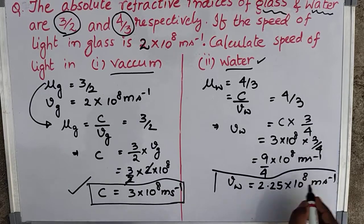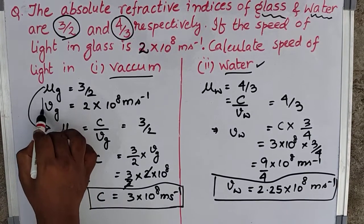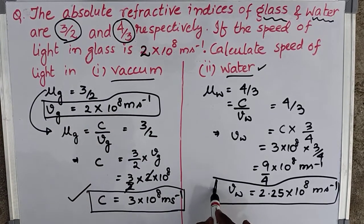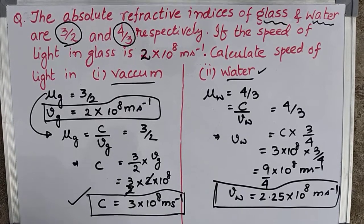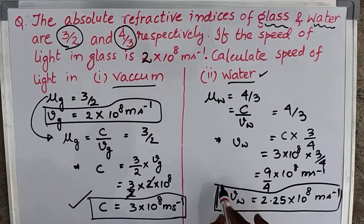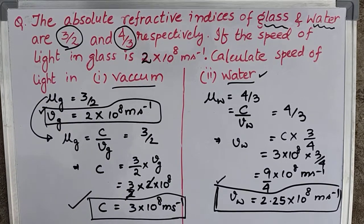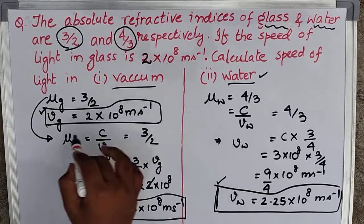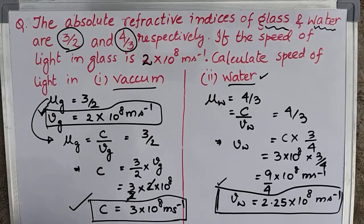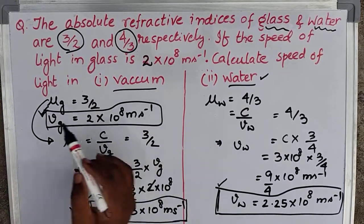Now, the speed of light in glass in this question is 2×10⁸ m/s and the speed of light in water is 2.25×10⁸ m/s. So the speed of light in water is more than the speed of light in glass. Therefore, glass is the optically denser medium, and when comparing glass with water, water is the optically rarer medium.